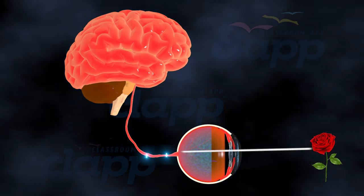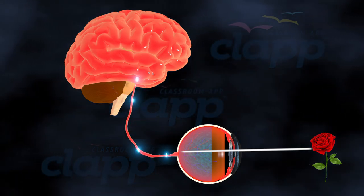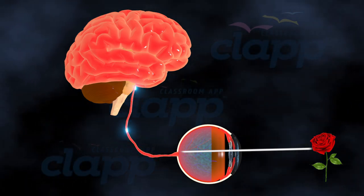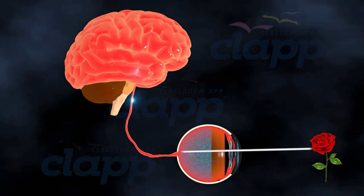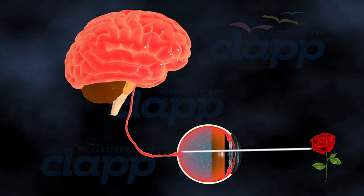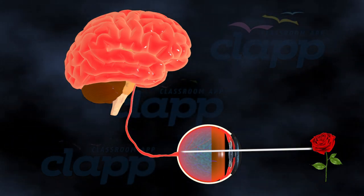Once the photoreceptors capture light, the information is sent as electrical signals through the optic nerve to the brain for processing. It's here that the images we see are interpreted, allowing us to perceive the beauty of the world.